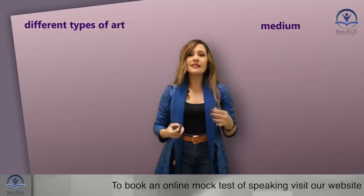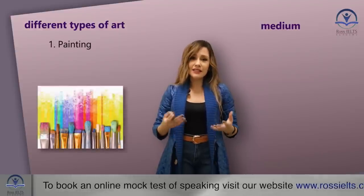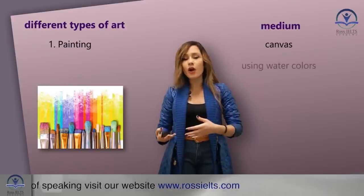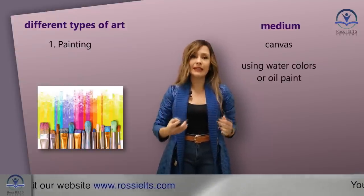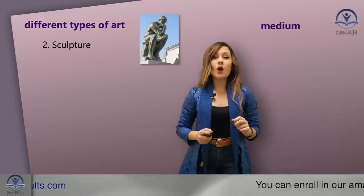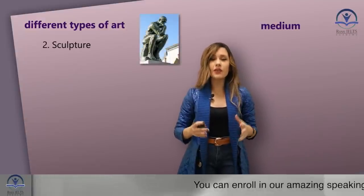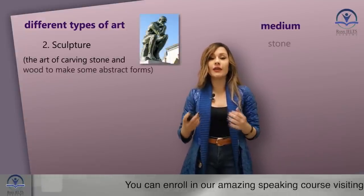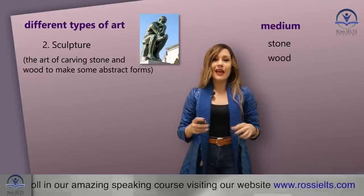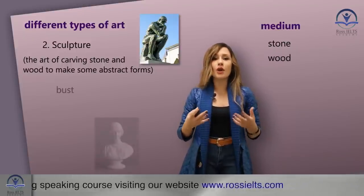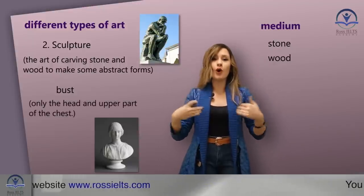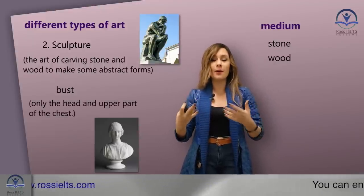The first type is painting — this is when you paint onto a canvas using watercolors or oil paint. The second is sculpture — this is the art of carving stone and wood to make abstract forms. A kind of sculpture is a bust, which is only the head and upper part of the chest.